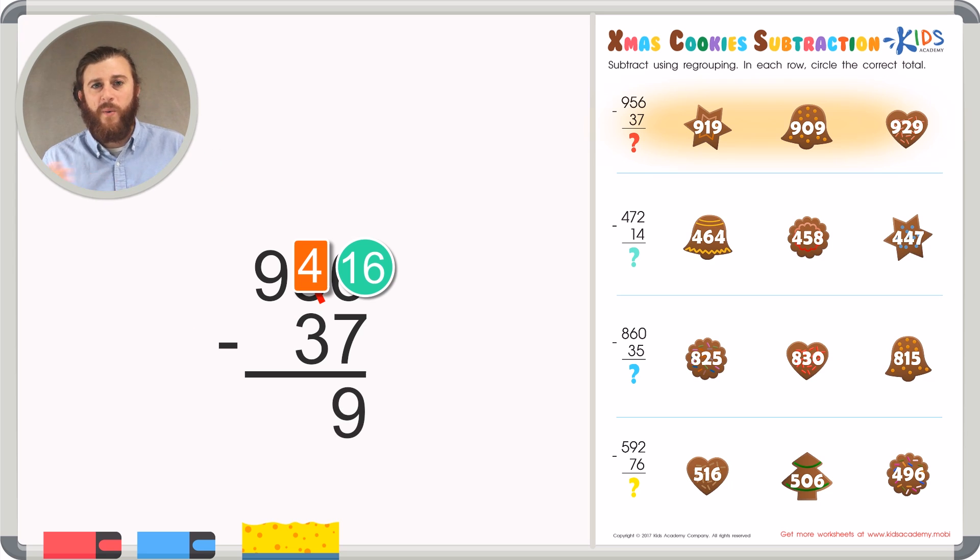Just like before, we can continue subtracting from right to left. 4 minus 3 in the tens place leaves us with 1. And 9 minus nothing in the hundreds place is 9. Giving us a difference of 956 minus 37 of 919, our first answer choice. So go ahead and circle that.